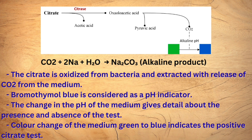A pH indicator, bromothymol blue, is used to detect the presence or absence of citrate utilization by microorganisms. A positive result shows a color change, while a negative result means the medium remains green in color.